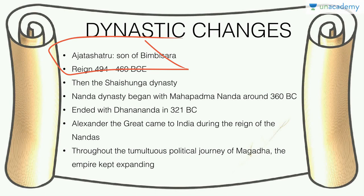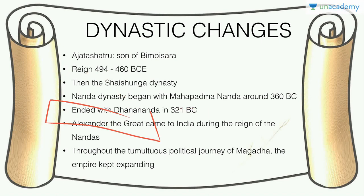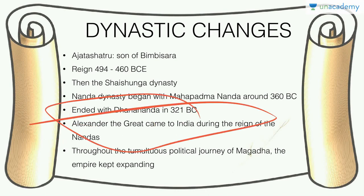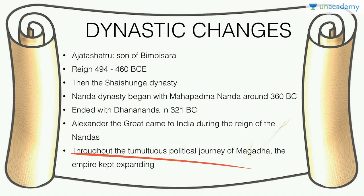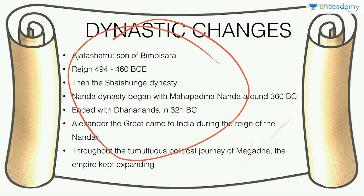Then there was the Shaisunaga dynasty, followed by the Nanda dynasty, which began with Mahapadmananda and ended with Dhanananda. The Nanda dynasty is important because Alexander the Great came to India during the reign of the Nandas. Throughout this political journey, Magadha kept expanding.